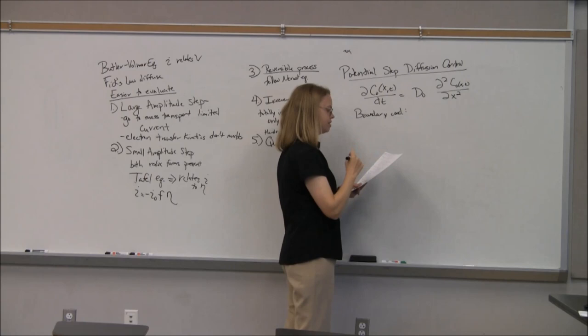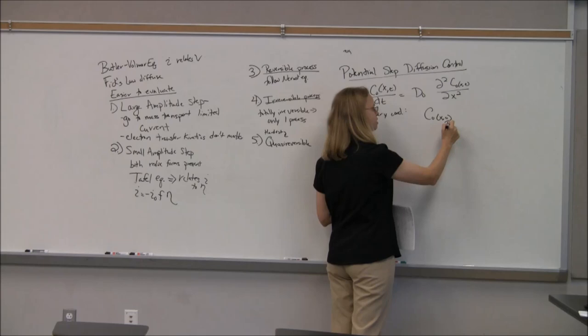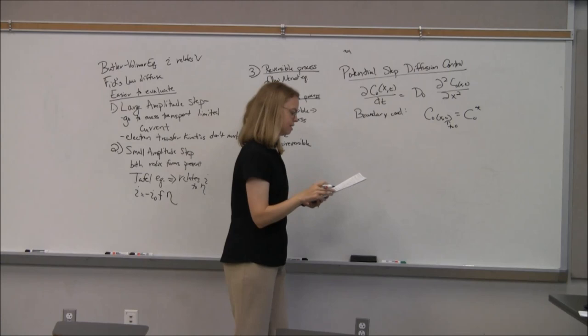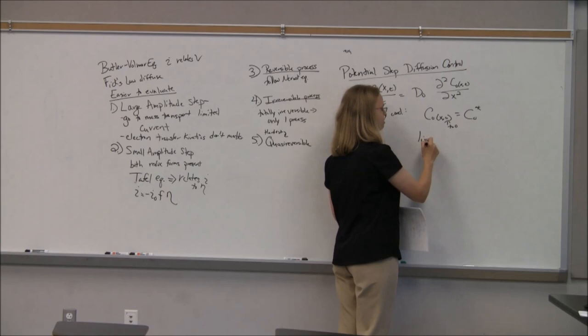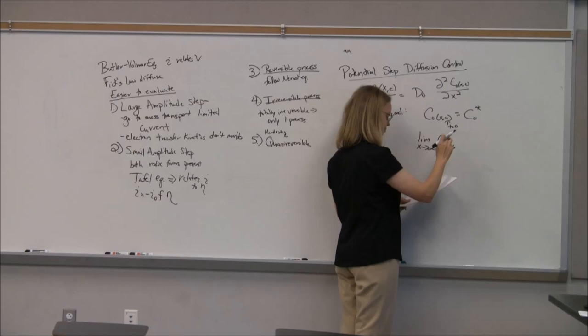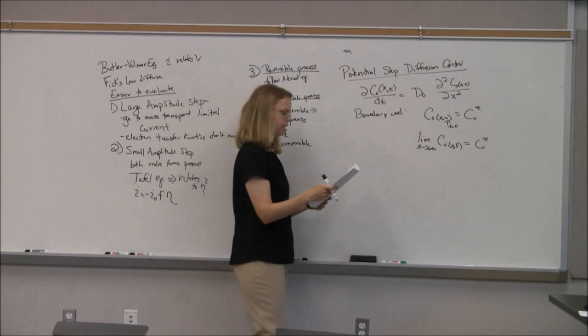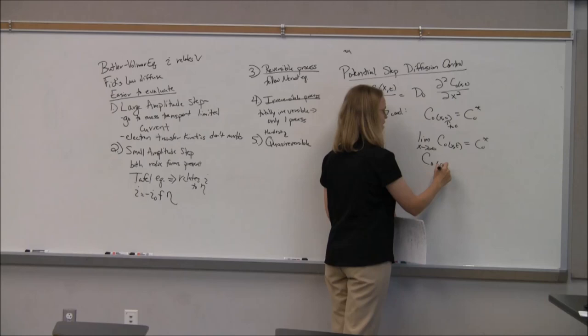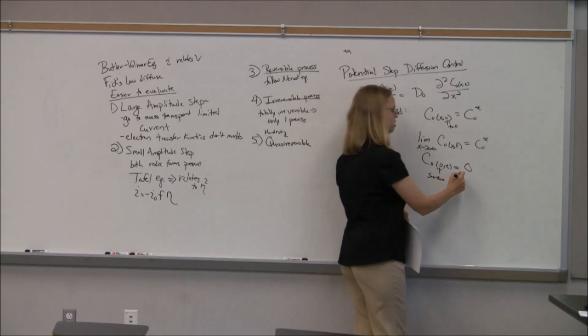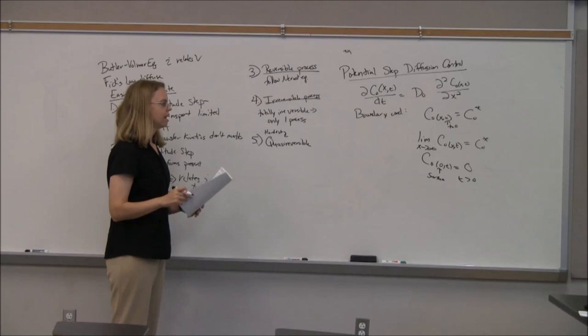Turns out it's in chapter five, not chapter four. So the Cottrell equation is the diffusion control equation for current. We're going to go back to what happens if we have a potential step under diffusion control. So we have Fick's second law. We'll remind ourselves of the change in concentration with time equals D times the second derivative for the change in concentration with distance. And it turns out that you have to set boundary conditions. We're going to assume that the initial concentration at time equal to zero is going to be the bulk concentration. That makes sense.